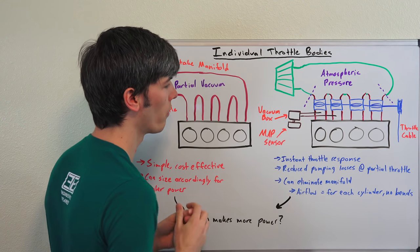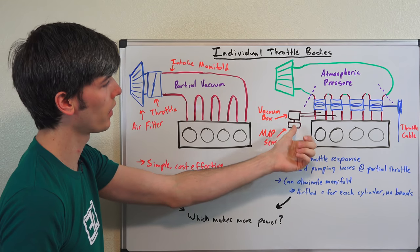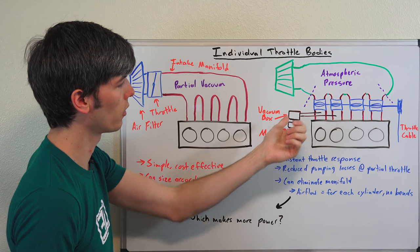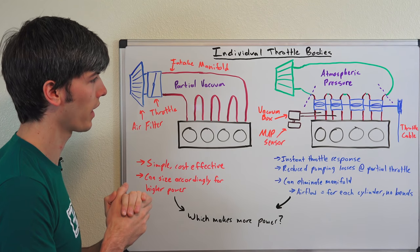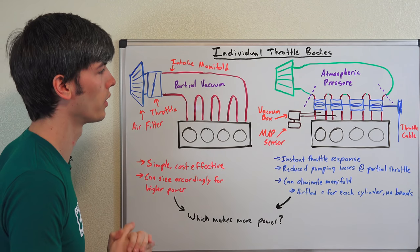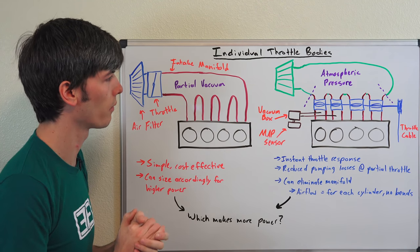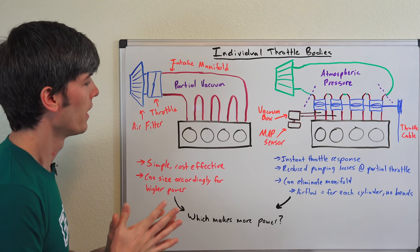And all of that will feed to a vacuum box and then you can have a MAP sensor which will connect up to that vacuum box. If you're unsure about how MAP sensors work I do have a separate video explaining that, but that's how you will tune the air fuel ratio of this system.